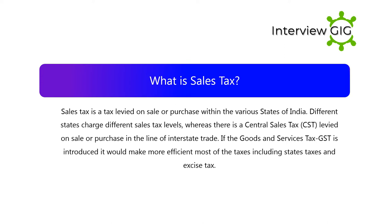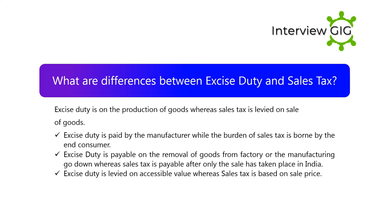Different states charge different sales tax levels, whereas there is a Central Sales Tax (CST) levied on sale or purchase in the course of interstate trade. If the Goods and Services Tax (GST) is introduced, it would make more efficient most of the taxes including state taxes and excise tax.